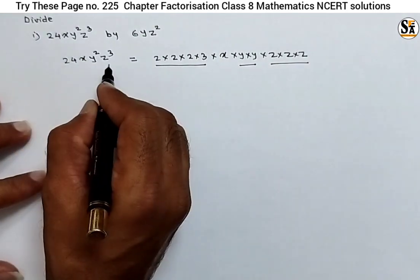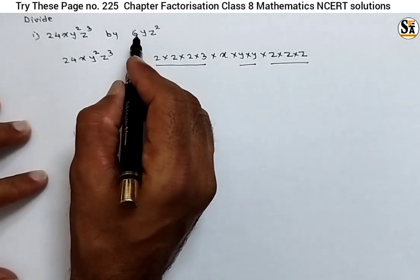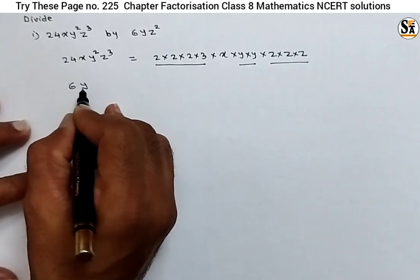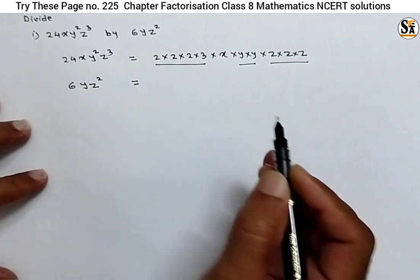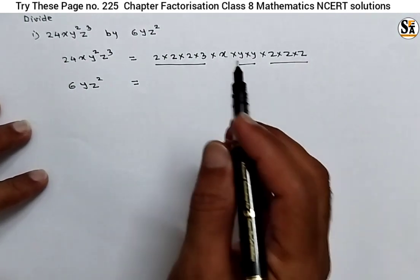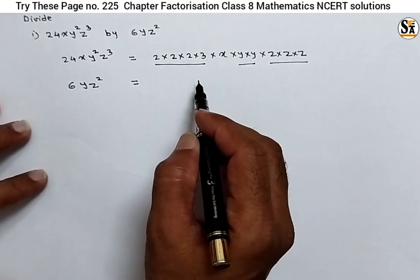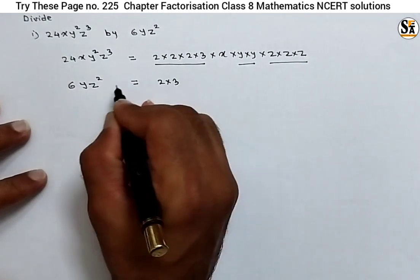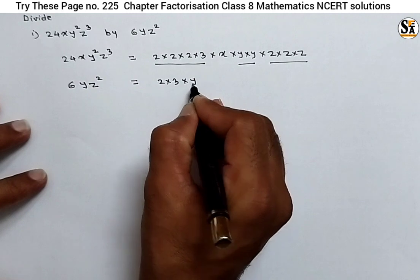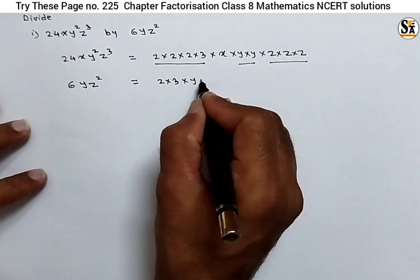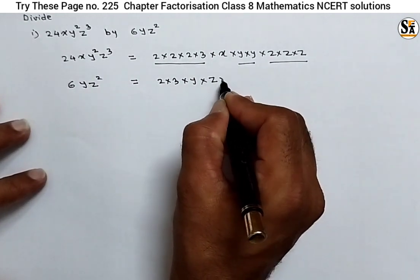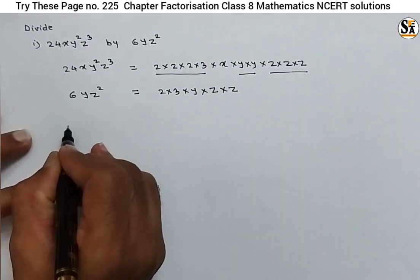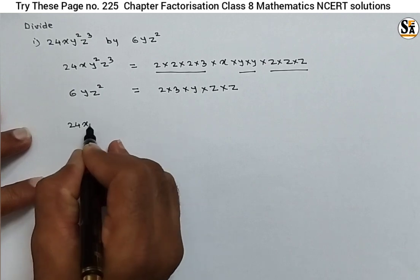Now find the factors of the second expression: 6·y·z². We are finding the factors because we can cancel the common factors to get our answer. 6 can be written as 2×3 — these are the prime factors of 6. y remains as it is, a single factor. And z² is written as z×z.